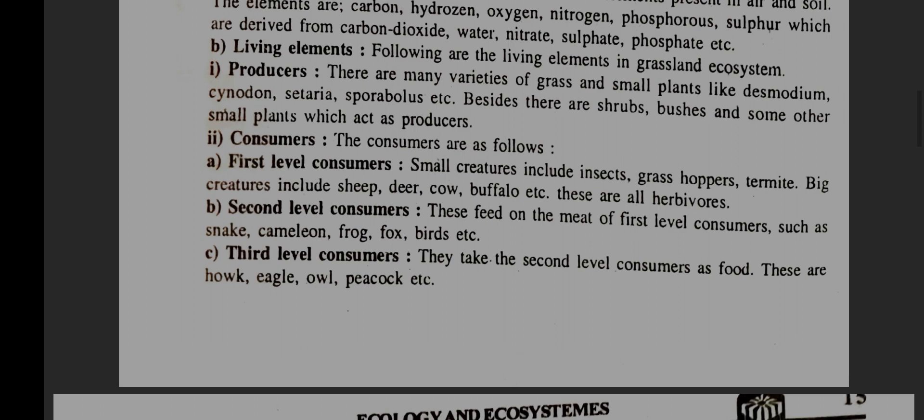B. Second level consumers: these feed on the meat of first level consumers, such as snake, chameleon, frog, fox, birds, etc. C. Third level consumers: they take the second level consumers as food. These are hawk, eagle, owl, peacock, etc.